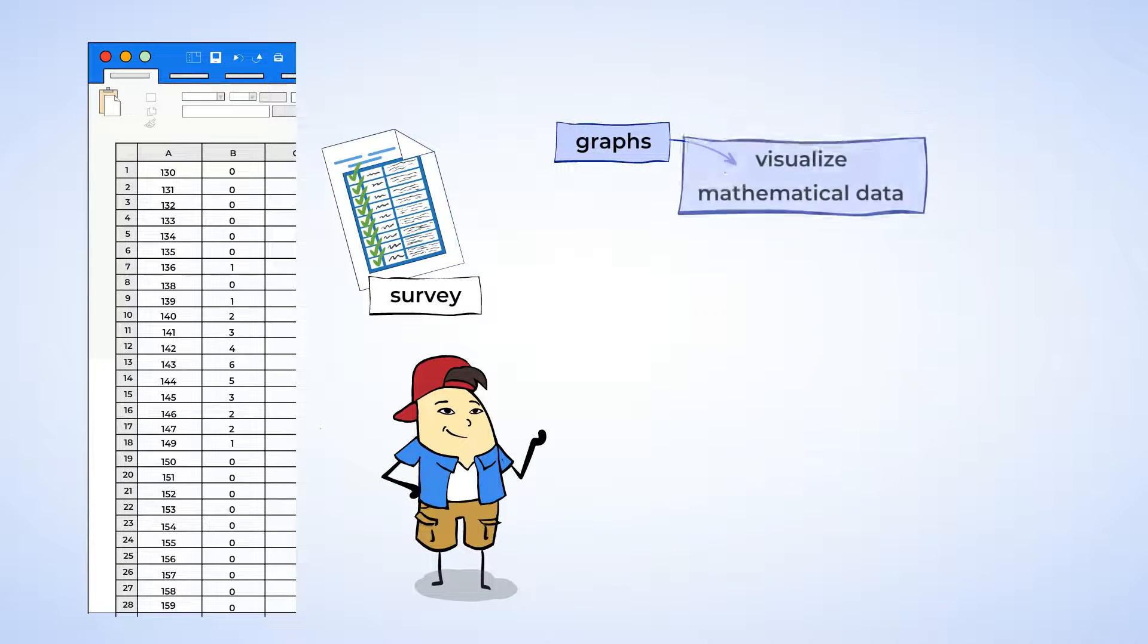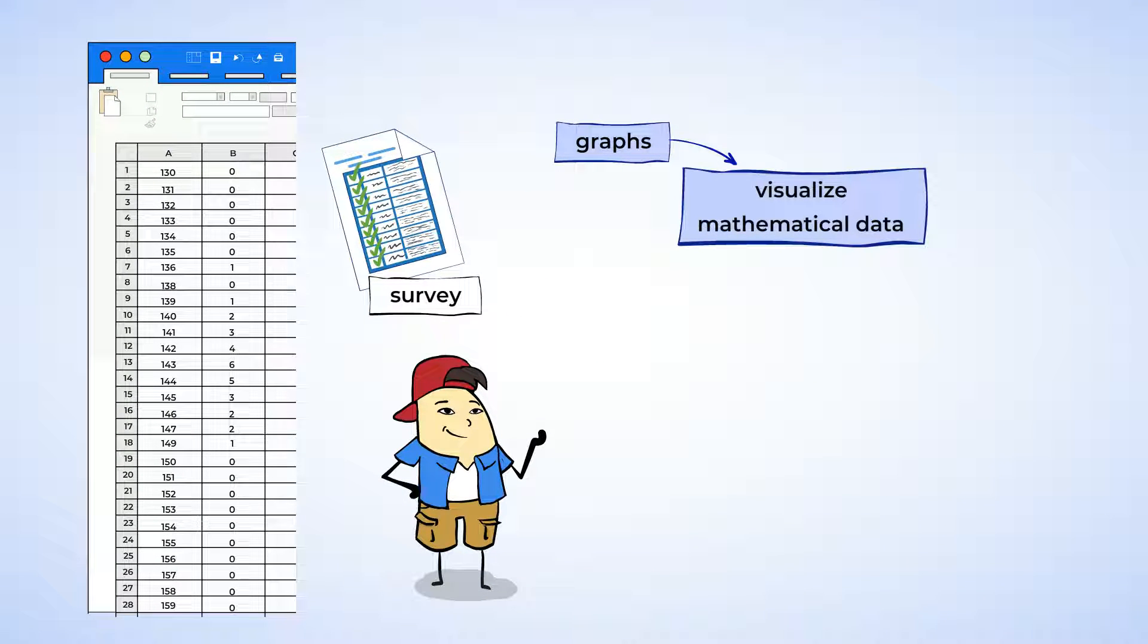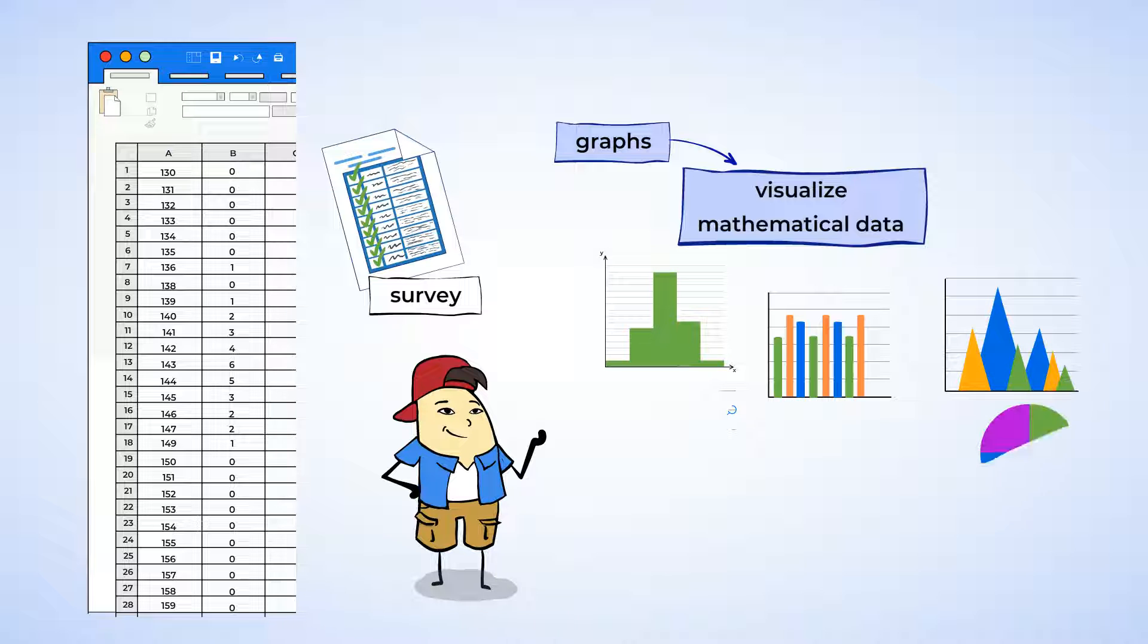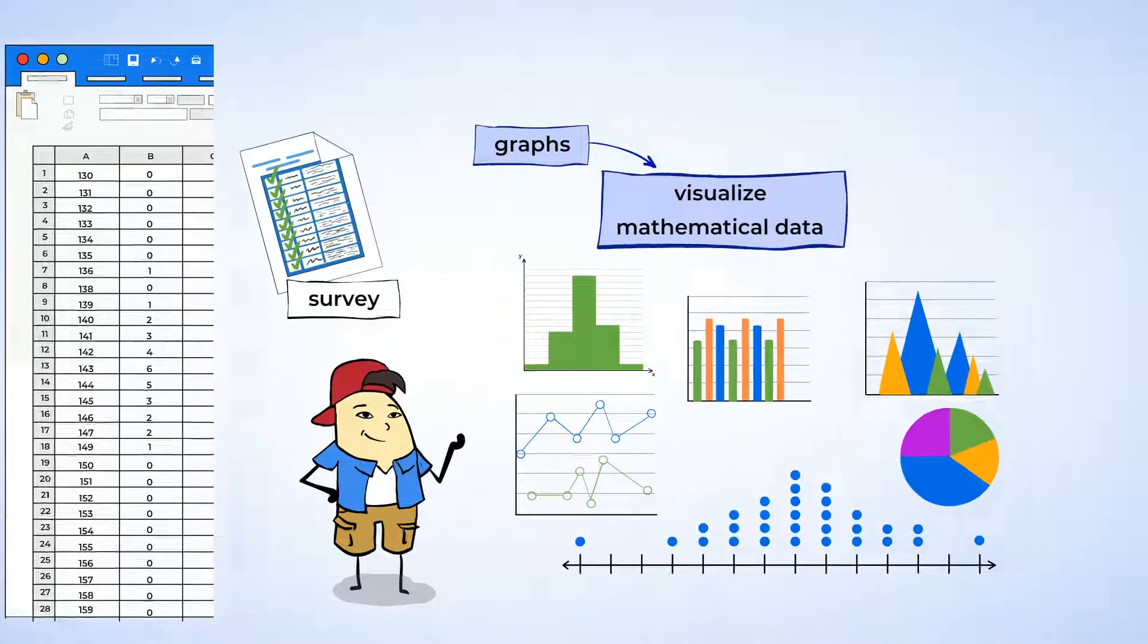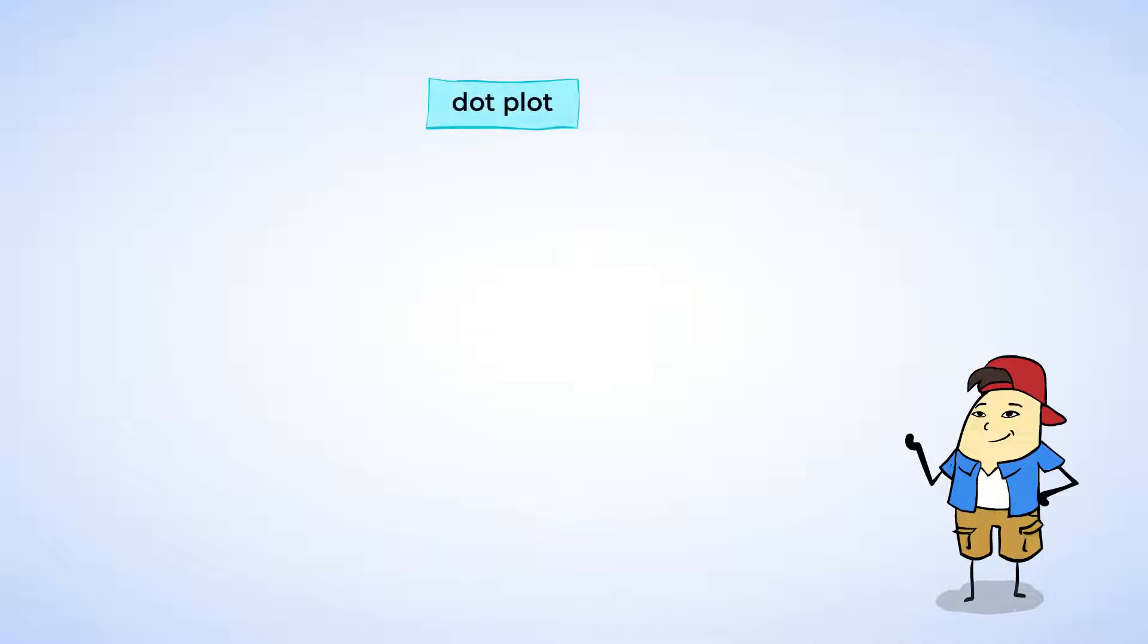Graphs are the best way to visualize mathematical data in a neat way. Used correctly, they can help you to understand data. A dot plot, or a line plot, is one way to represent data.